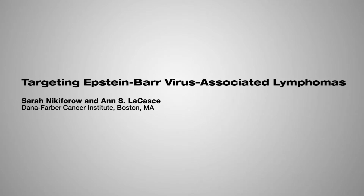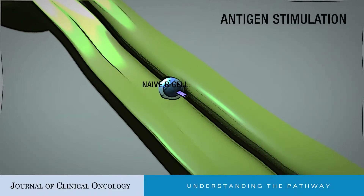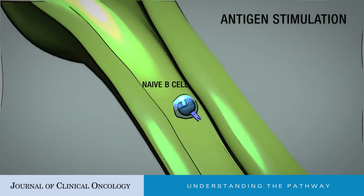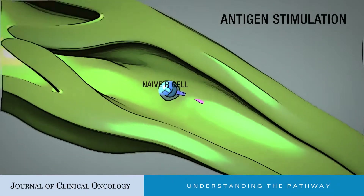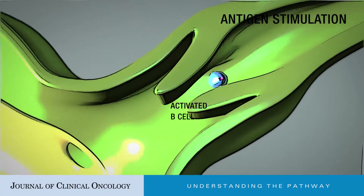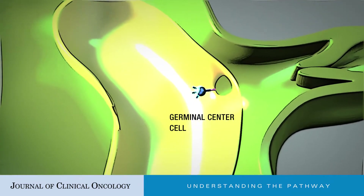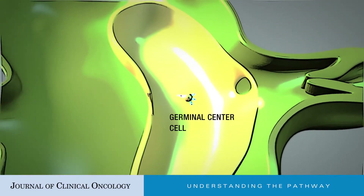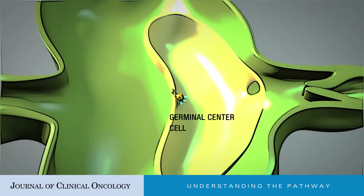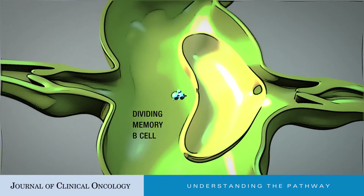Targeting Epstein-Barr virus-associated lymphomas. During stimulation of naive B cells by antigen, a progression from activated B cell through the germinal center and differentiation to a memory B cell occurred.